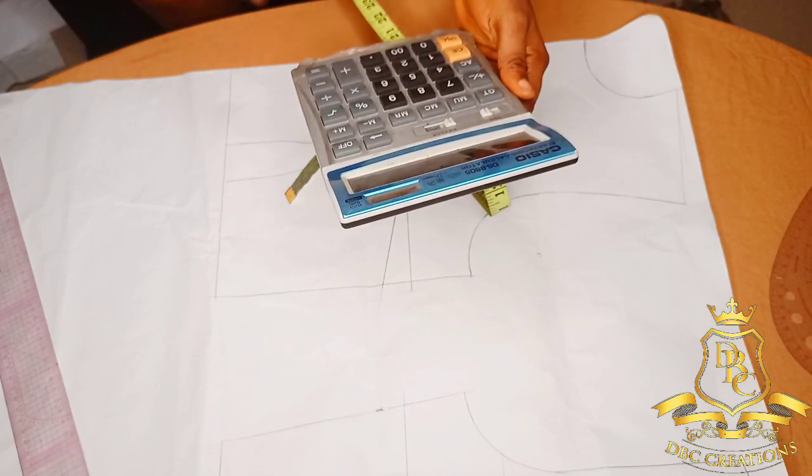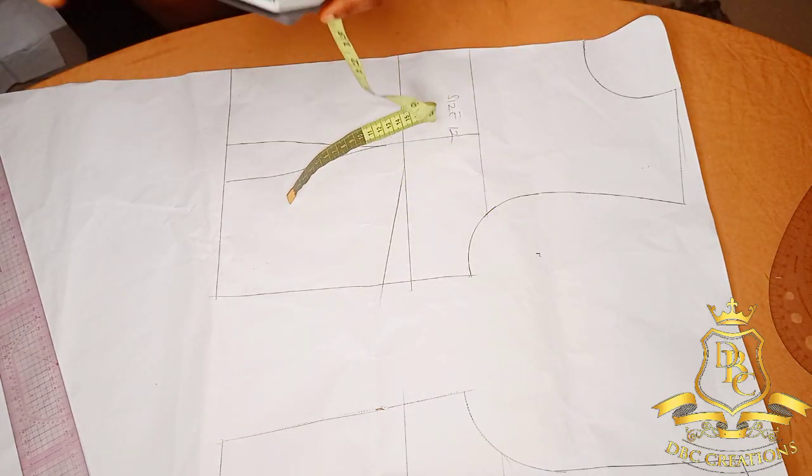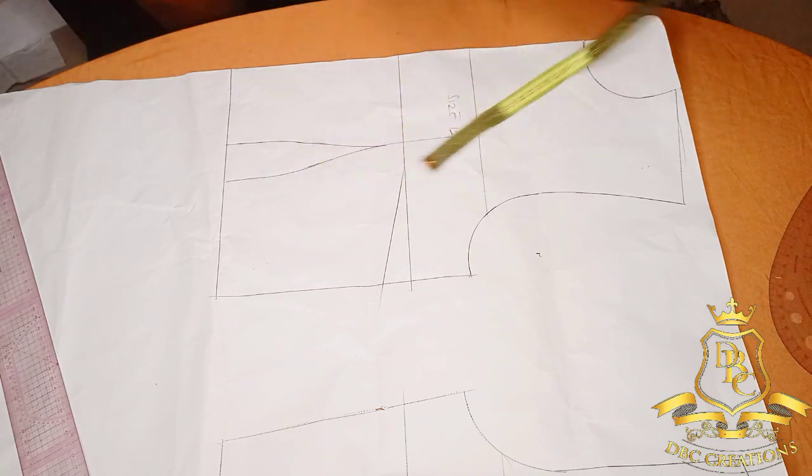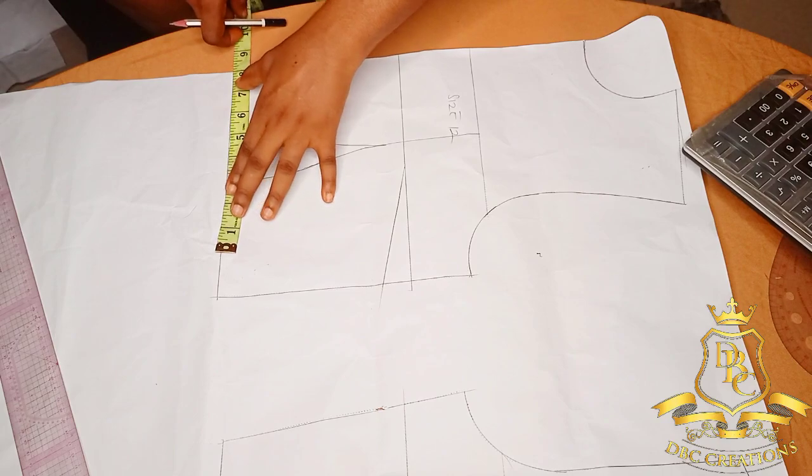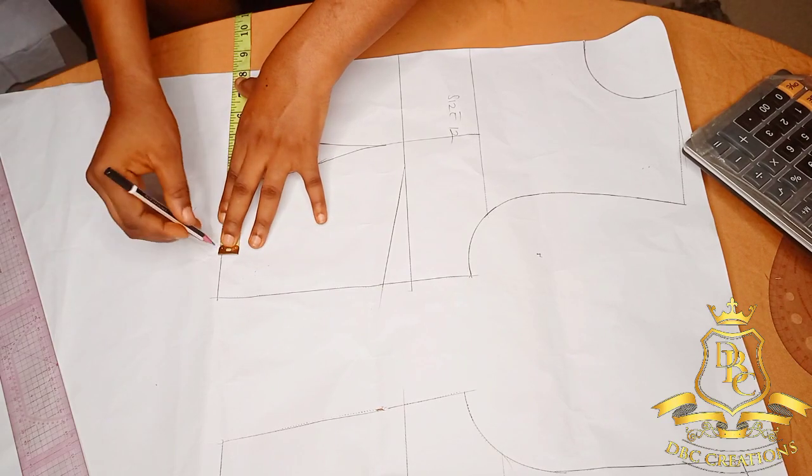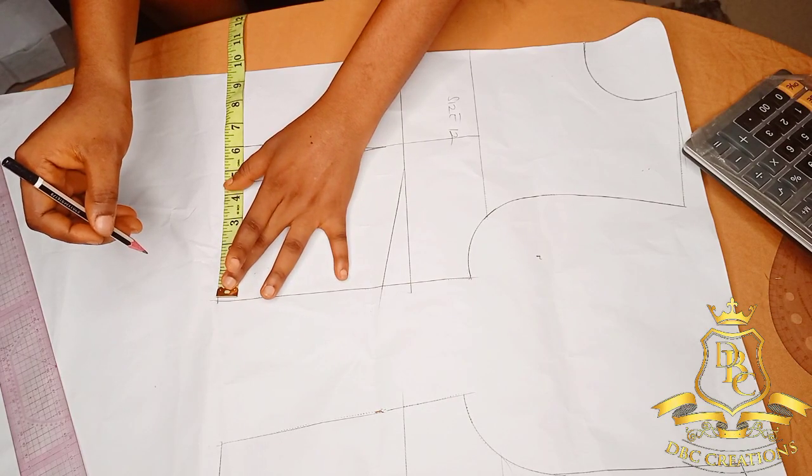What's my waist? My waist is 32 divided by 4, which will give me 8. So I'm going to remeasure it. I still have 1.5 here.